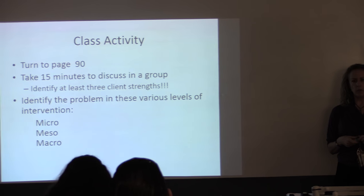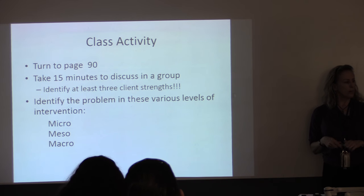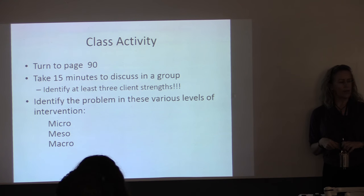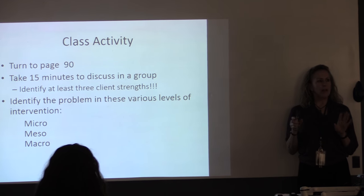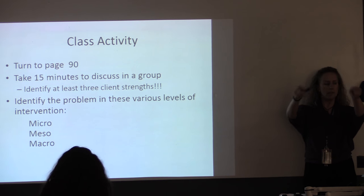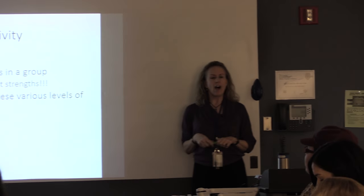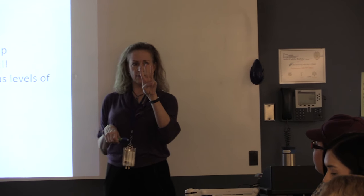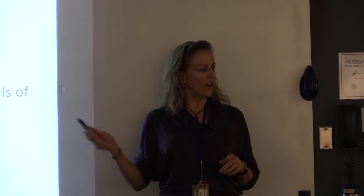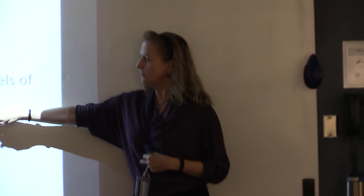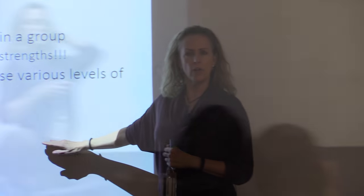The activity we're going to do in class is turn to page 90, read the case study of Florence, and then break into small groups at your table. You'll identify at least three of Florence's strengths — because as social workers we identify strengths first and use those strengths to intervene with the problem. Then identify the problems at the various levels of intervention: micro, meso, and macro.